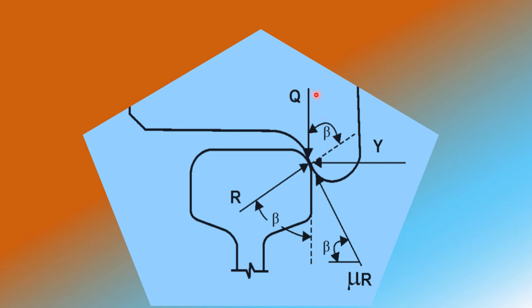In this figure we see the various forces at the point of rail-wheel contact: the vertical force Q, which is the load on the wheel set; the lateral force Y; the coefficient of friction force and the reactionary force acting in this direction; and the flange angle beta.